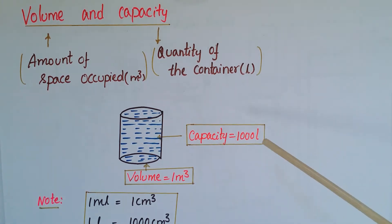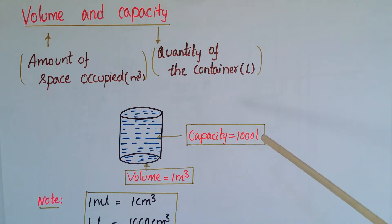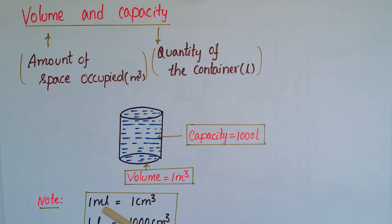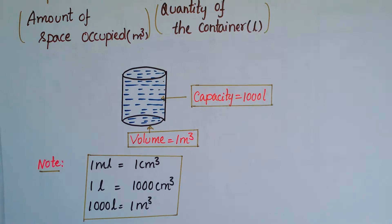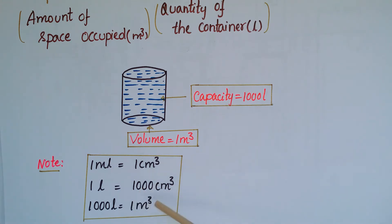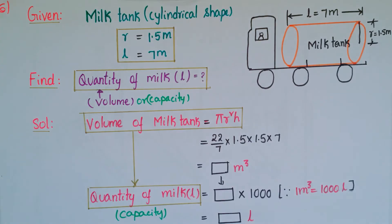Here are the relations between milliliters and centimeters: one milliliter is equal to one centimeter cube, one liter is equal to one thousand centimeter cube, and one thousand liters is equal to one meter cube.